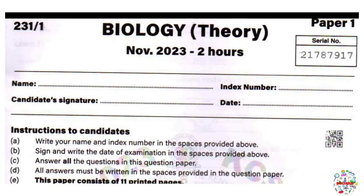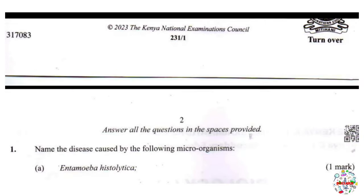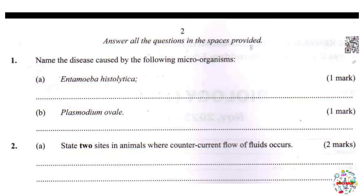Let's revise KCC Biology 2023 Paper 1. On to our first question: name the disease caused by the following microorganisms. Part A: Entamoeba histolytica. Of course, this disease is amoebic dysentery.